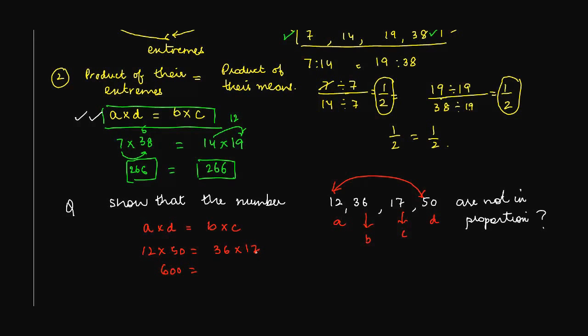So 12 into 50 should be equal to 36 into 17. Now 12 into 50 gives you 600. 36 into 17 will give you, 17 times 6 is 102, 10 carry, 17 times 3 is 51 plus 10, 61. But we know that 600 is not equal to 612, hence we can safely assume that these numbers are not in proportion because if they were in proportion then the product of the two extremes should be equal to the product of the means, which is not the case over here.